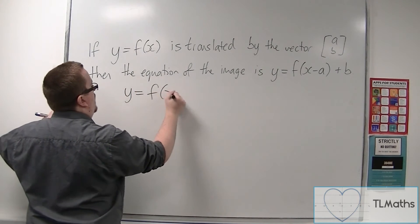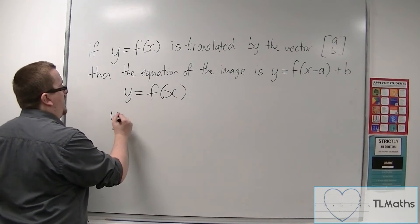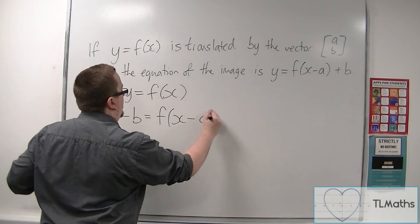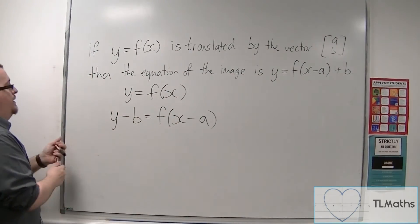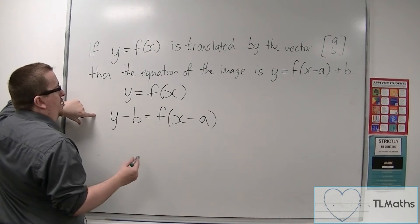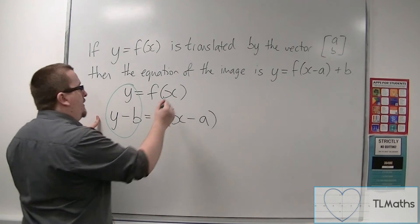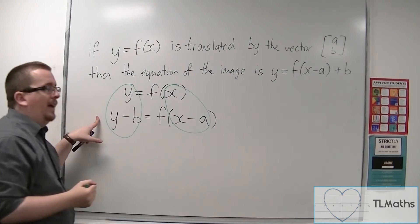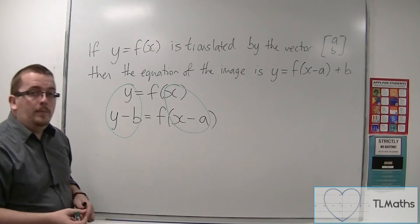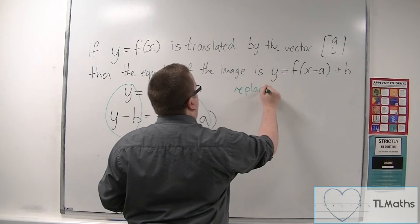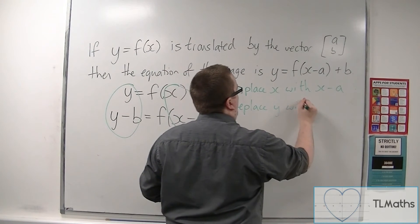So if we have y equals f of x, I'm going to rewrite that one. And then what I'm going to do over here is take b from both sides. So I'm going to have y minus b equals f of x minus a. So all I've done is rearranged this equation, taken b from both sides, and I've got these two now. So let's compare what's happened. We can see that the y has been replaced with y minus b, and the x has been replaced with x minus a. So if you're translating a function by the vector (a, b), replace x with x minus a and replace y with y minus b.